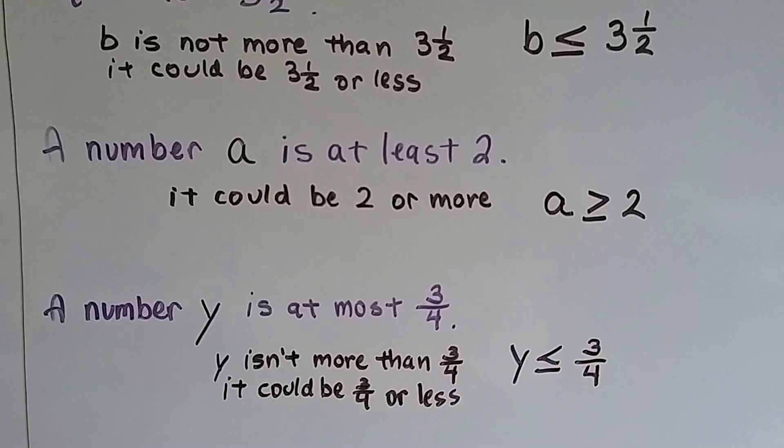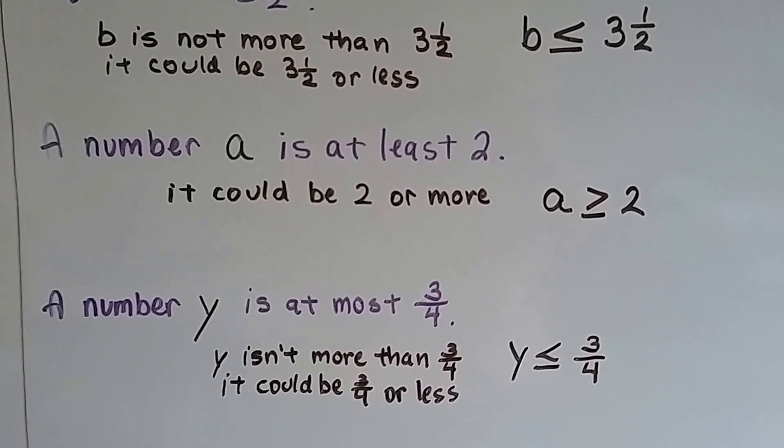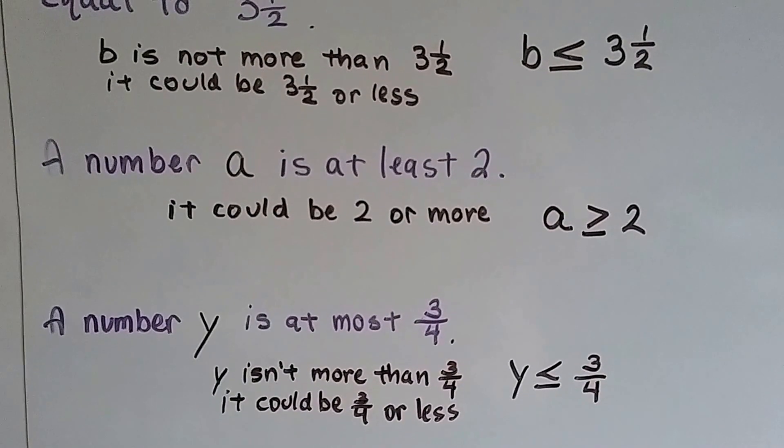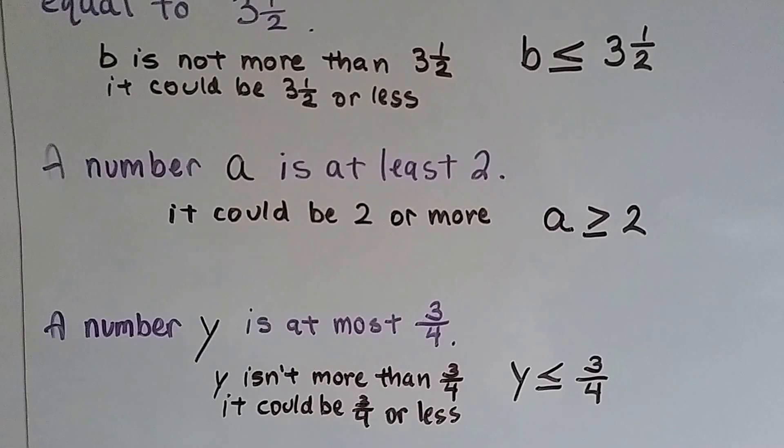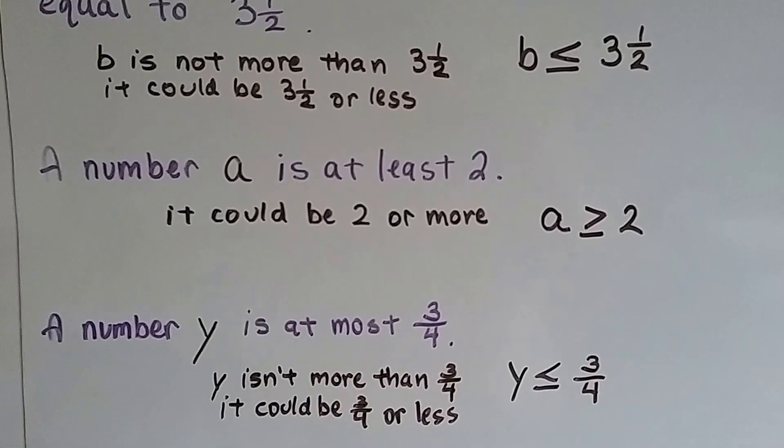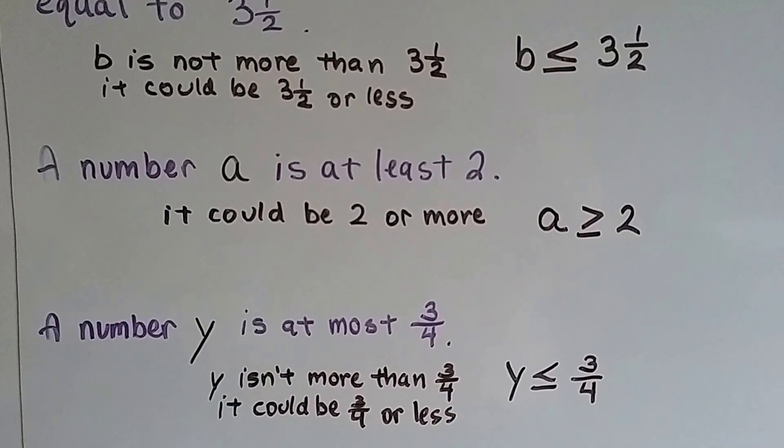The number y is at most 3 fourths. So, y isn't more than 3 fourths. It says at most it's 3 fourths. That's the cutoff. So, it isn't more than 3 fourths. It could be 3 fourths or it could be less.